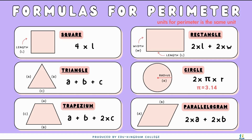So the formula for the perimeter of a rectangle is going to be 2 times the length plus 2 times the width. For a triangle, it's just adding the three sides together.